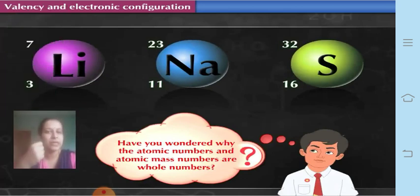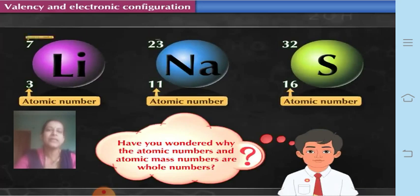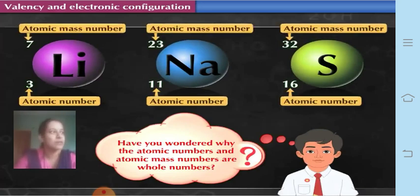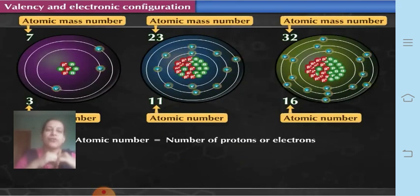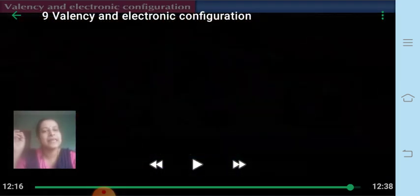Have you wondered why the atomic number and atomic mass numbers are always whole numbers? We always say atomic number of carbon is 6 and atomic mass number is 12 — why can't it be 12.4? The atomic number is the number of protons or electrons present, and the atomic mass number is the number of protons plus the number of neutrons. A proton cannot be cut into half a proton or one-fourth of a proton, so we cannot have decimal fractions — they must always be whole numbers.